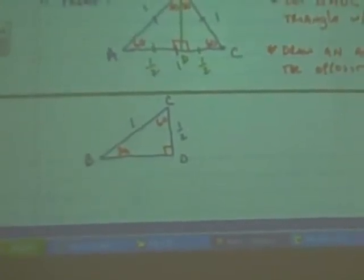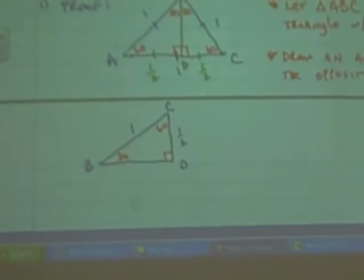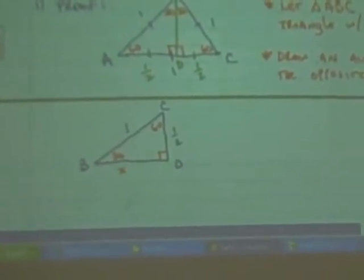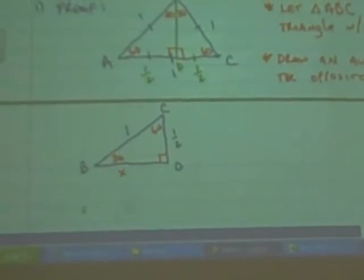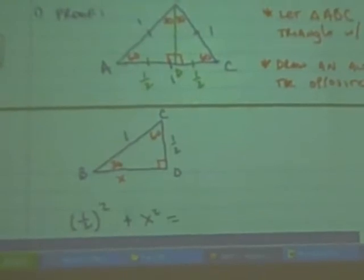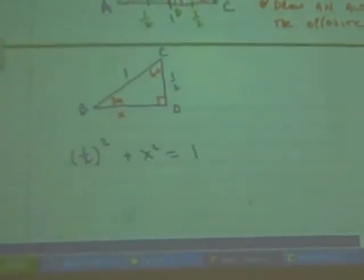You have to use the Pythagorean theorem. If you let this be X, then what can I write? One half squared plus X squared equals one squared. One half squared plus X squared equals one squared, which is just one, right?